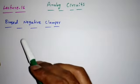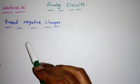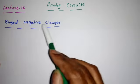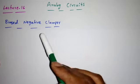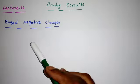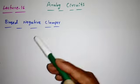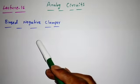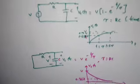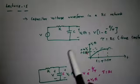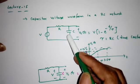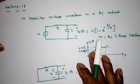Hi everyone, this is lecture 16 in analog circuits. In this lecture we will discuss the biased negative clampers. Before that, we will review what we discussed in the previous lecture — how the capacitor charges in an RC network.